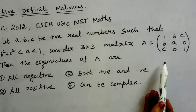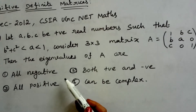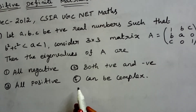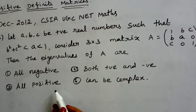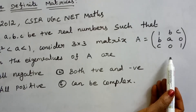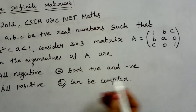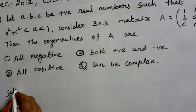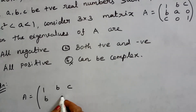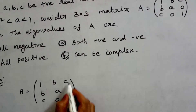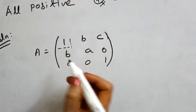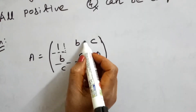The given matrix is symmetric. To determine the sign of the eigenvalues, we check if it is a positive definite matrix. If all leading principal minors are positive, the matrix is positive definite and all eigenvalues are positive.